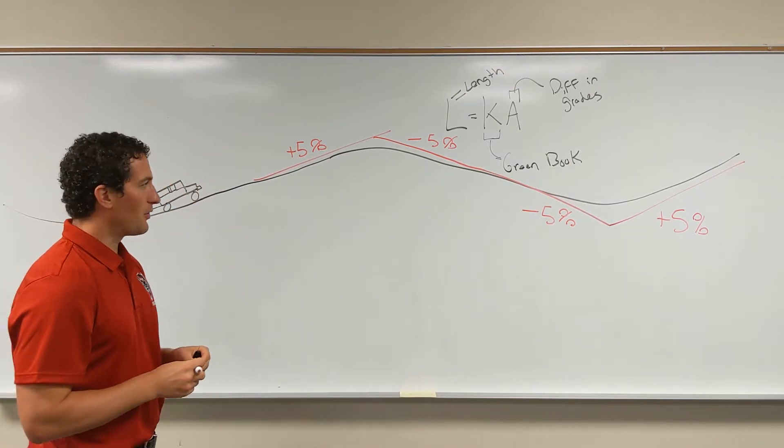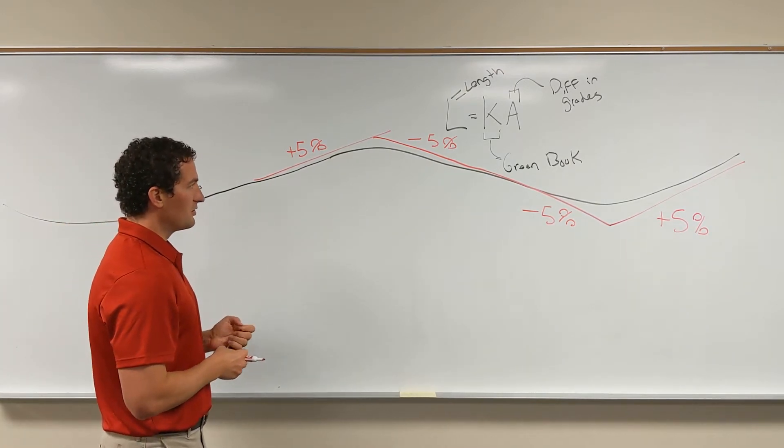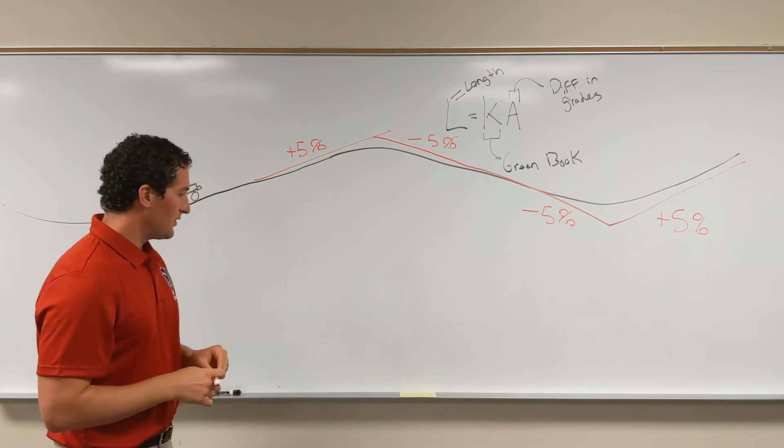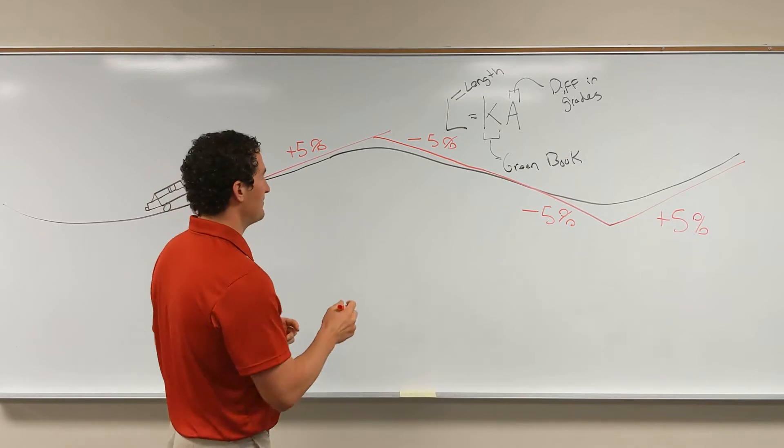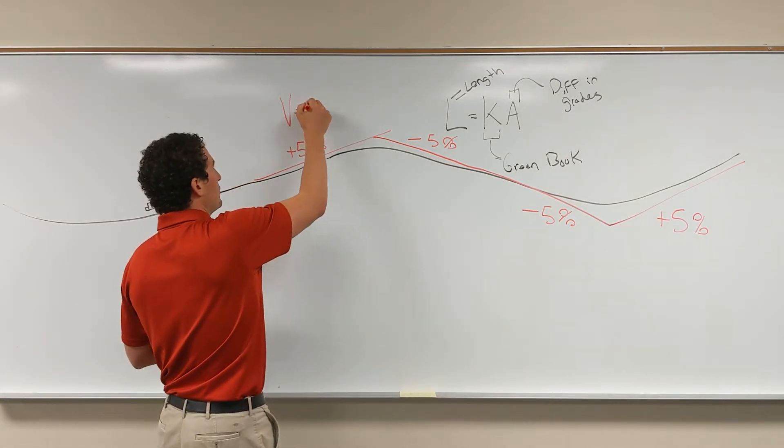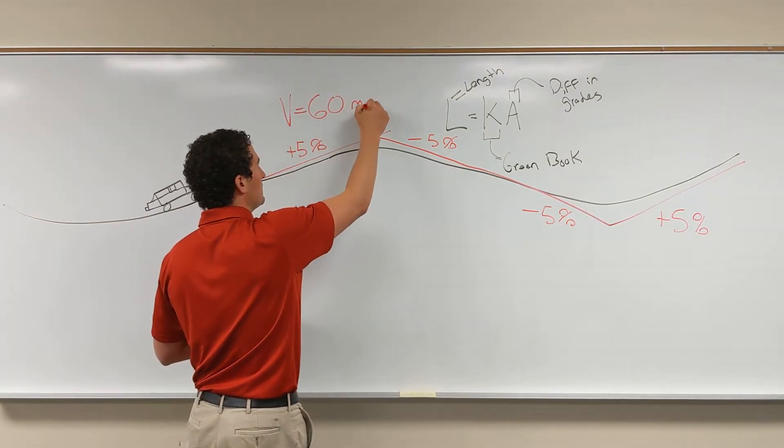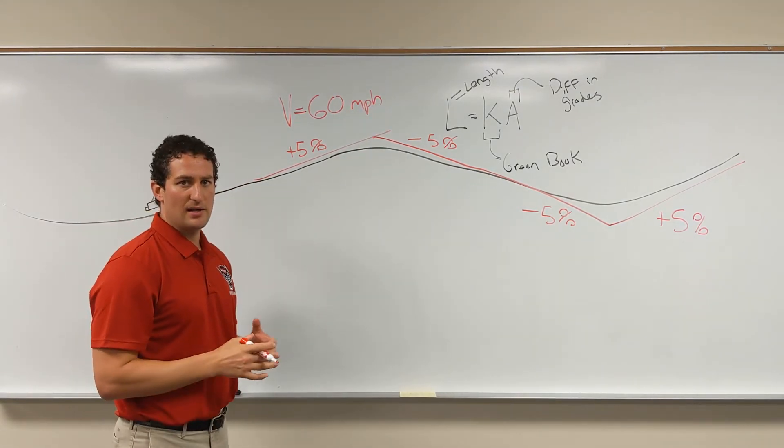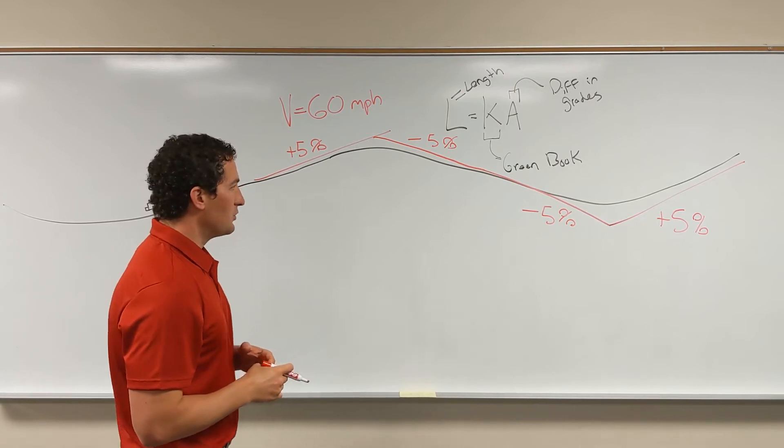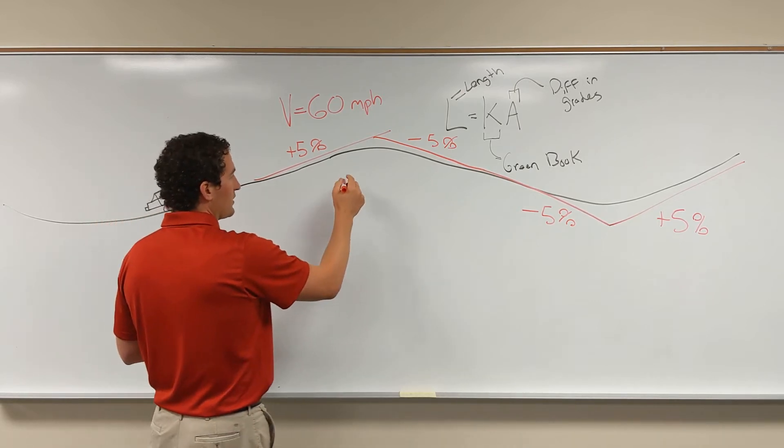This is fairly steep for a roadway and typically we'll have grades that are lower than those, depending on the type of terrain that you're working with. For this, we'll also need to assume a design speed, and we'll use 60 miles per hour. The Green Book has a wide variety of design speeds that you can use for this curve.